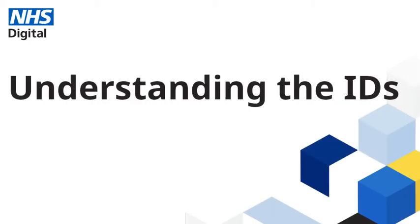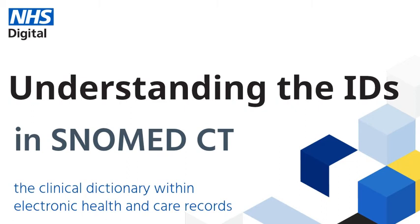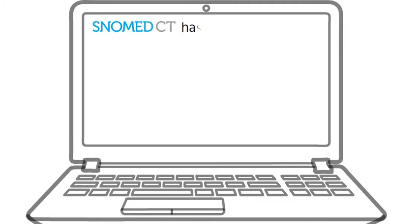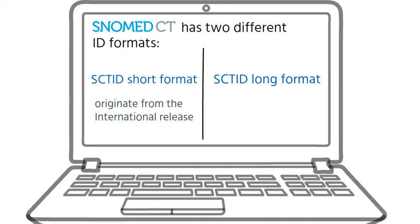Understanding the IDs in SNOMED CT, the clinical dictionary within Electronic Health and Care Records. SNOMED CT has two different ID formats: a short format and a long format. The short formats originate from the international release and the long format originates from an extension.